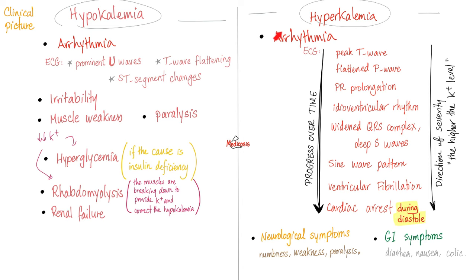Abnormal excitation can happen to other muscles, not just the heart — muscle weakness, paralysis, irritability. When potassium is too low in the blood, cells will start to sacrifice themselves to bring potassium from inside to outside, which can lead to rhabdomyolysis.